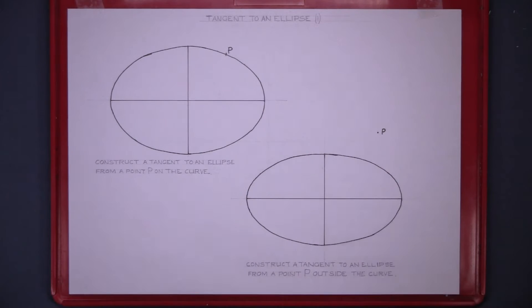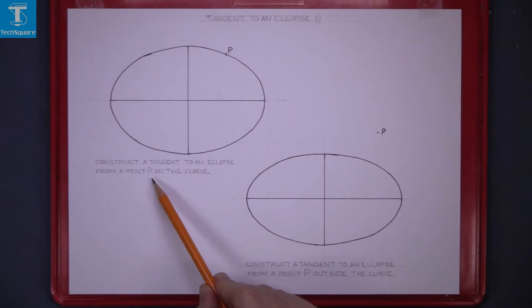Tangent to an ellipse 1. Construct a tangent to an ellipse from a point on the curve.